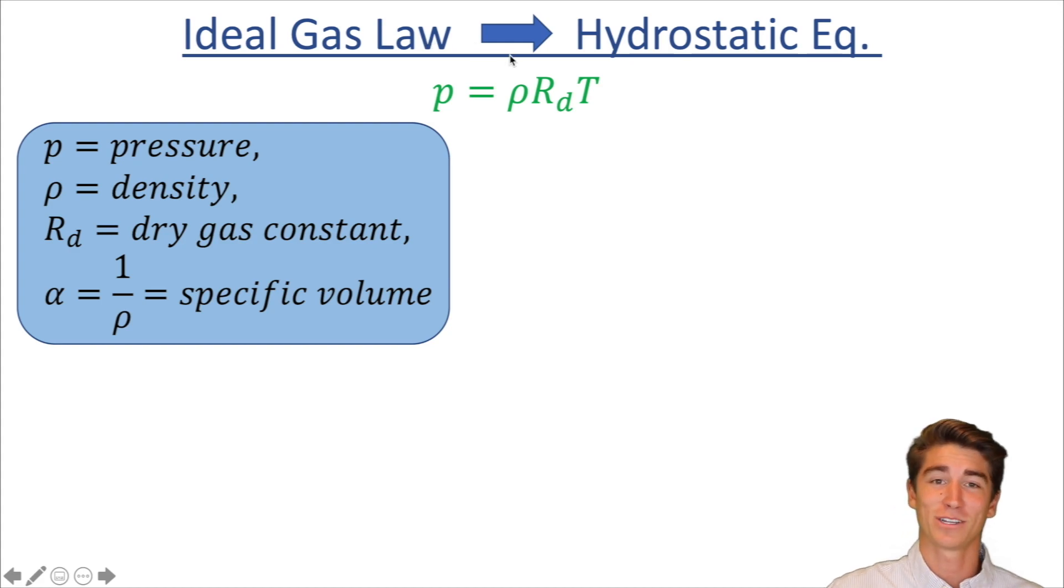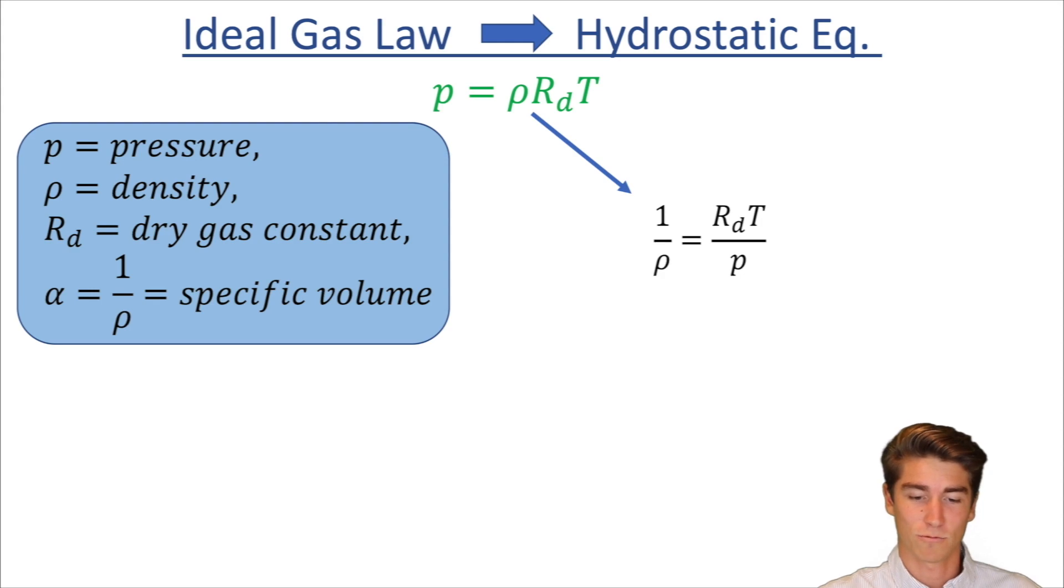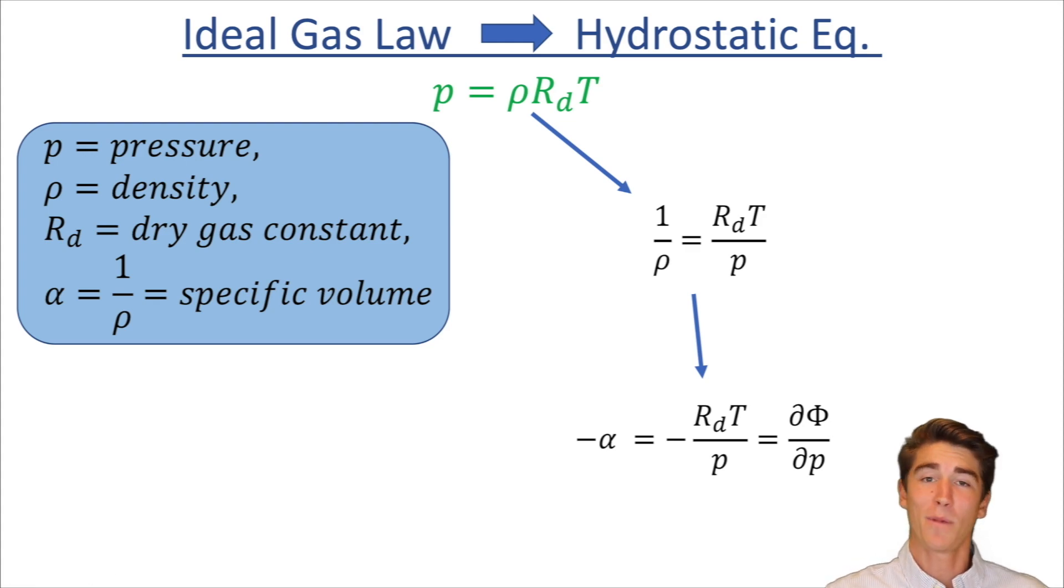So we're going to manipulate the ideal gas law to get a different form of the hydrostatic equation. What we're going to do is we're going to take this rho put it on the left side, take pressure put it on the right side and we're going to end up with one over rho equals rt over p. That one over rho we can replace with specific volume and then that rt over p can also be written as delta phi over delta p. That symbol there represents geopotential and that's so important that I'm actually going to do an entire video about that so subscribe to my channel if you want to see that video.